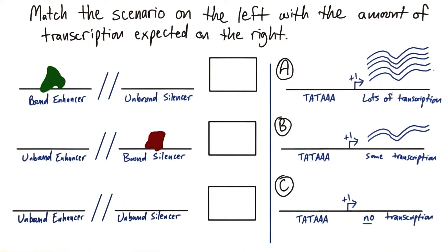We need to match the scenario on the right with the scenario on the left. So which scenario on the left would give us, let's say, the least amount of transcription?